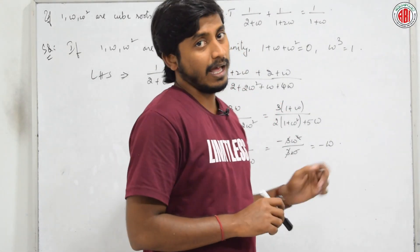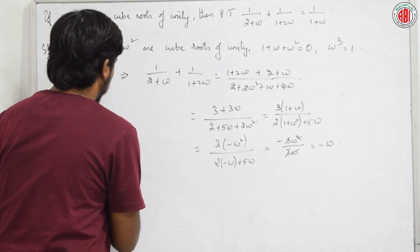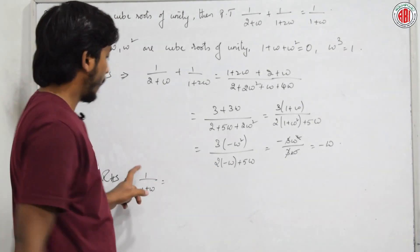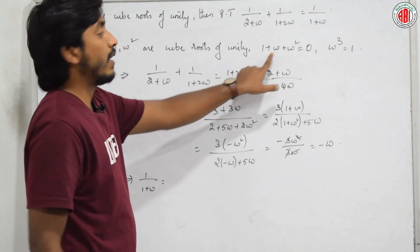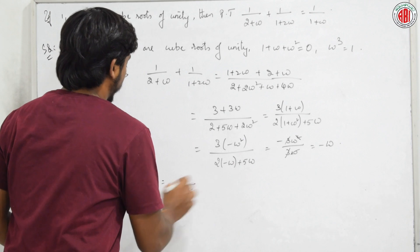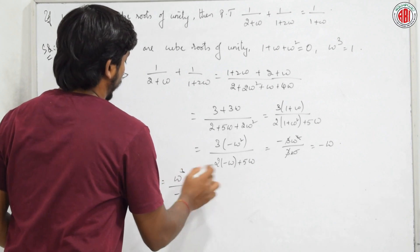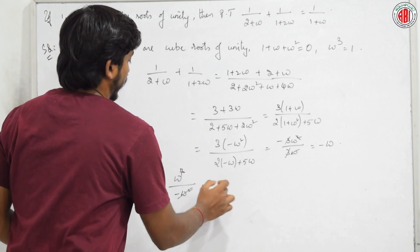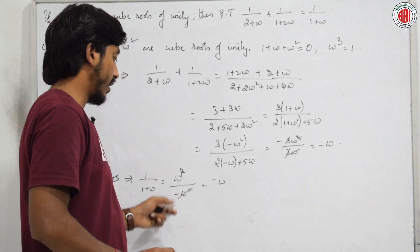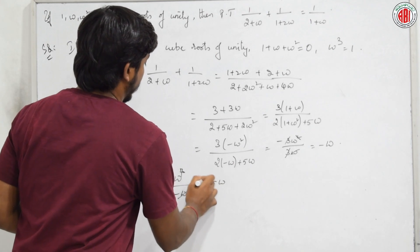For RHS: 1/(1+ω). Since 1+ω = −ω², this is 1/(−ω²) = −ω³/ω² (writing 1 = ω³) = −ω. Therefore RHS = −ω.